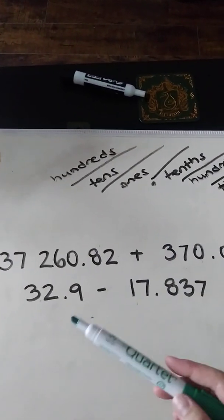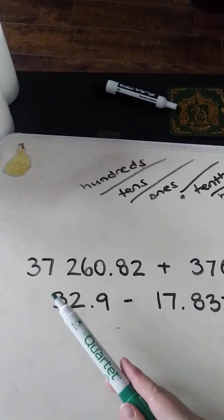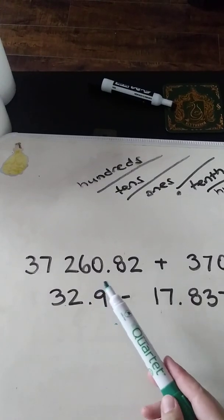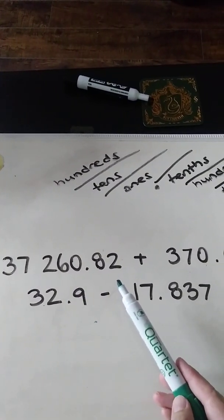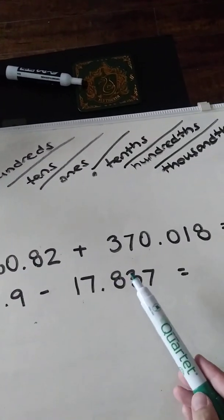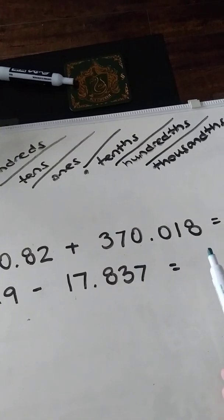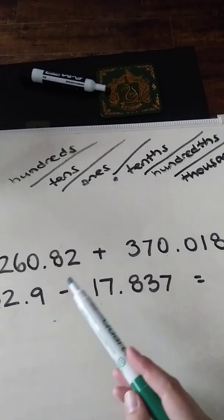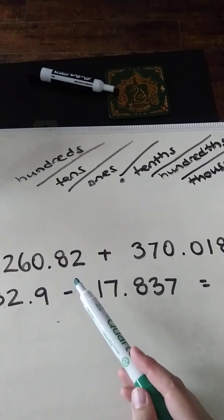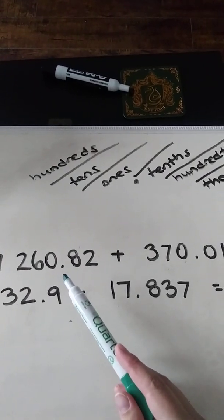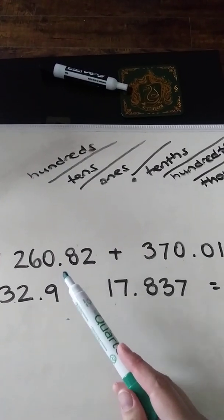For the examples today we're going to add 37,260 and 82 hundredths plus 370 and 18 thousandths. Remember the way I say it, as described in the last video, the decimal is 'and' - that's the way you say it.